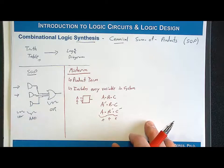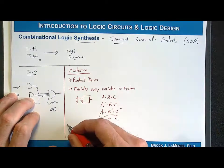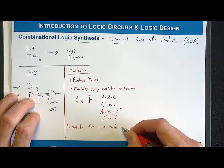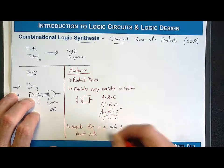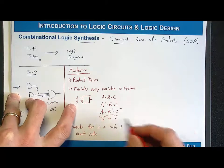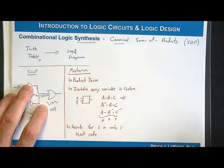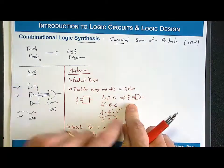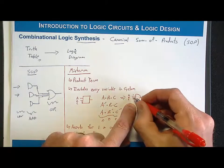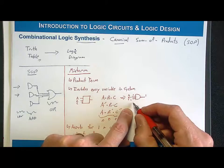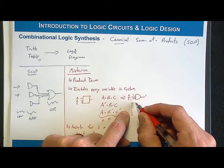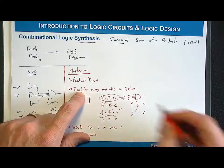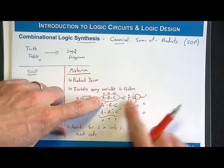The final characteristic of a min term is that it asserts for one and only one input code, and the way we accomplish that is by inserting the inversions. For example, the min term ABC implemented as an AND gate with A, B, and C would only output a 1 when all inputs are 1, 1, 1. At any other code it produces a 0. So this min term corresponds to input code 1, 1, 1, meaning A̅, B̅, C̅ — a fully inverted version — would assert for input code 0, 0, 0.